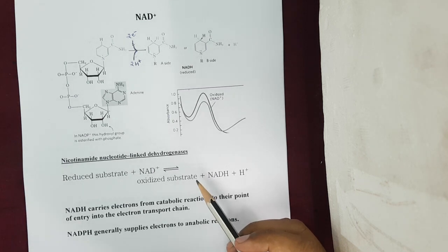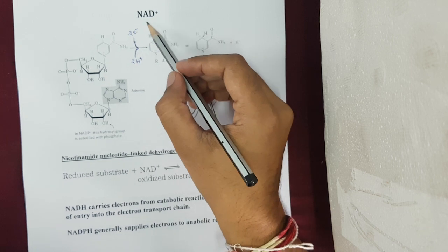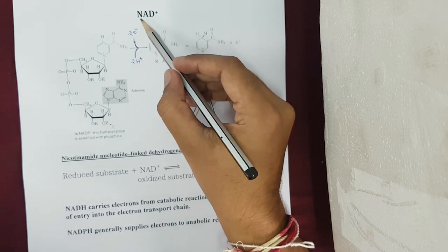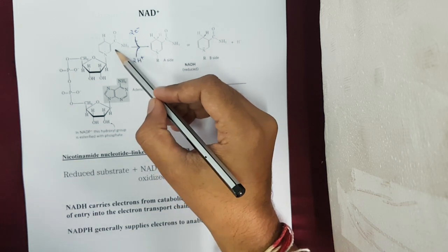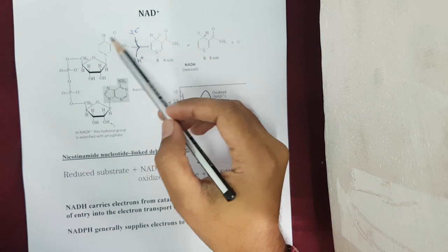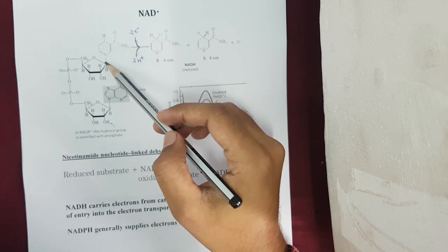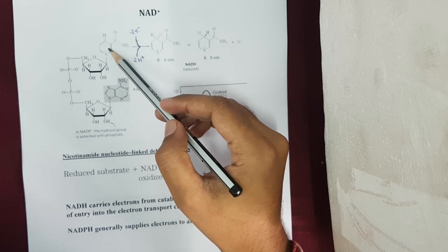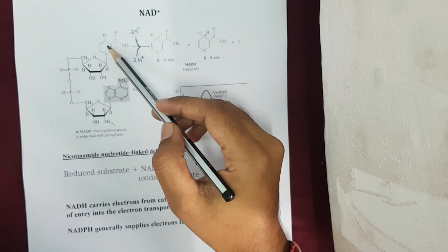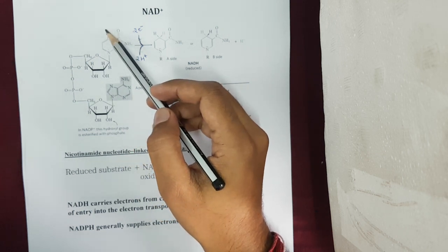First we need to discuss about one of the electron carriers called NAD. NAD is the abbreviation for nicotinamide adenine dinucleotide. If you look into the structure of NAD, it has the nicotinamide, which is derived from the vitamin called niacin. This nicotinamide is attached to a ribose sugar, and in turn the ribose sugar is attached to a phosphate group. The nicotinamide acts as the base and is attached to the sugar, and the sugar is attached to the phosphate group.